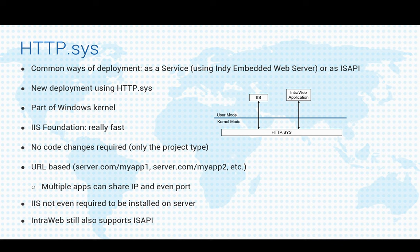This is a bit different from deploying as a service, where the application takes one port for itself. With HTTP.sys you don't need to install anything because it's already part of the Windows kernel, and it's very simple to deploy — you just install your IntraWeb application as a service. It's my favorite way of deploying apps right now.